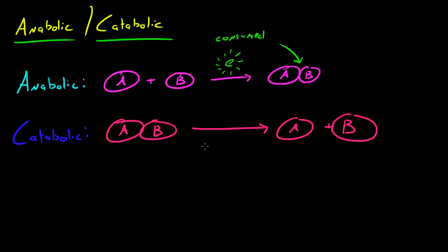Now in a catabolic chemical reaction what happens is whenever two molecules break apart energy is released. So released. So what happens here is when A breaks apart from B energy is going to be released in the form usually of heat.